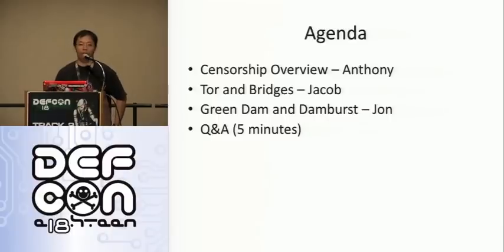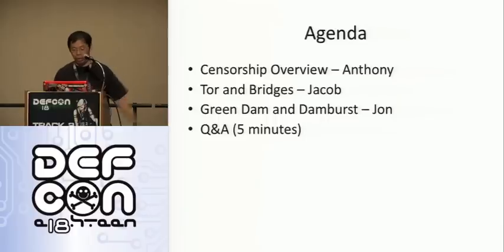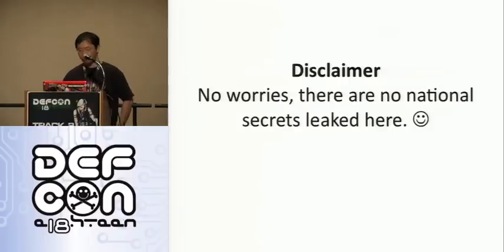I will talk about a censorship overview, then Tor and bridges from Jacob, and the Green Dam and the numbers from John.